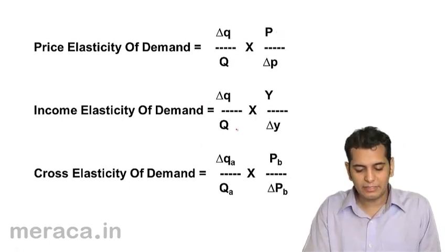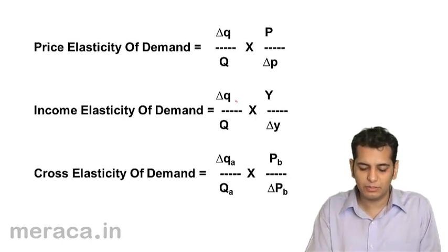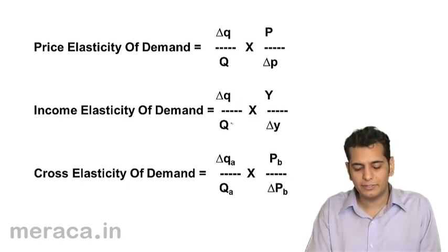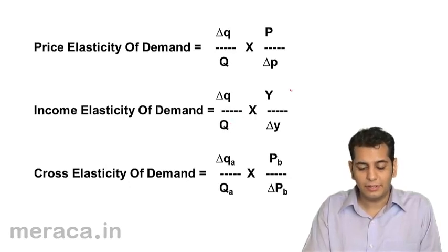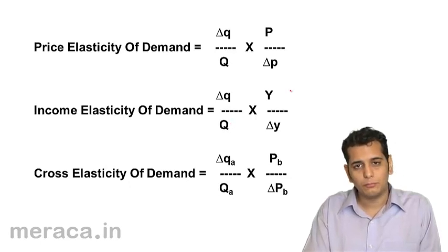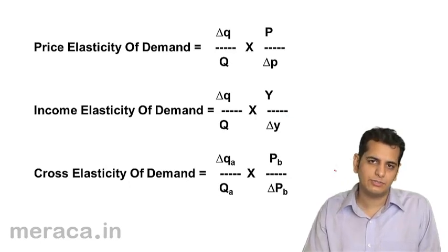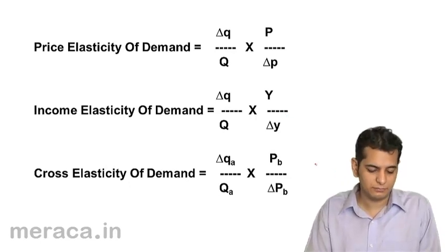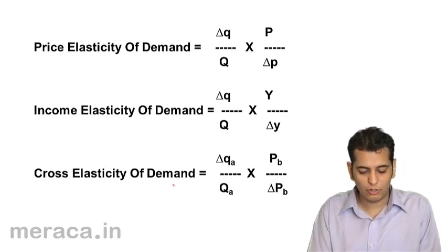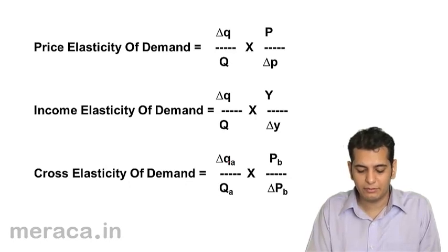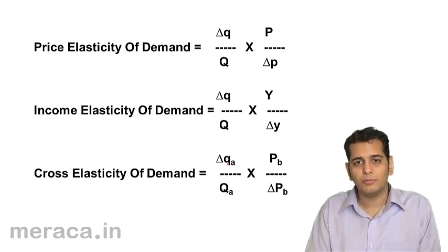Income elasticity of demand can also be calculated with this formula: change in quantity divided by original quantity, multiplied by original income divided by change in income. Cross elasticity of demand can be calculated with the formula: